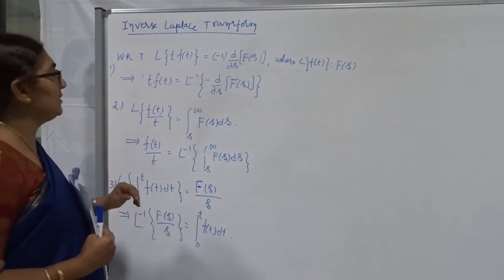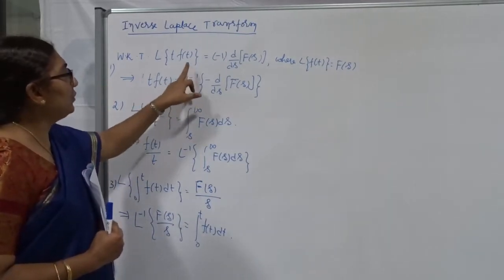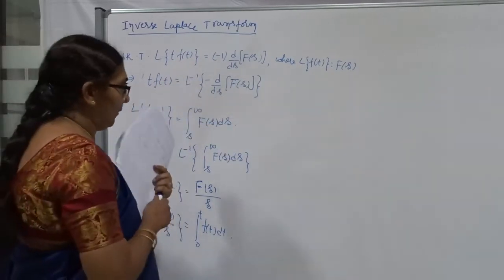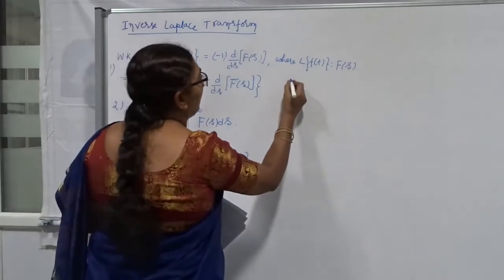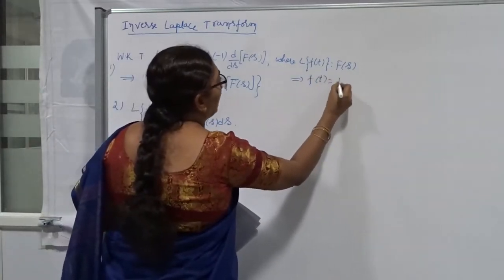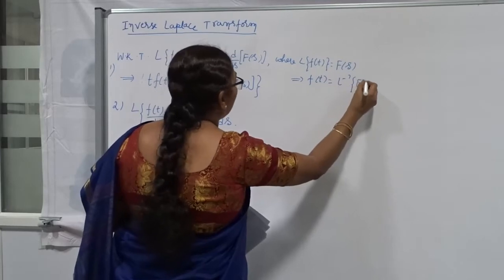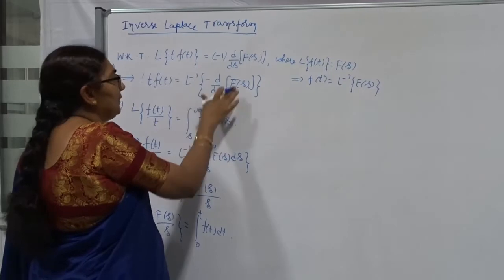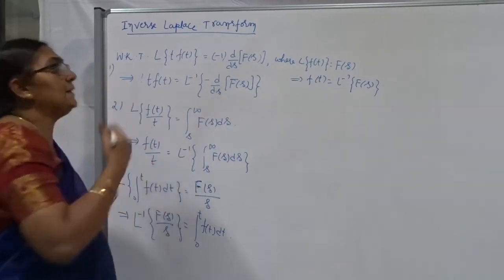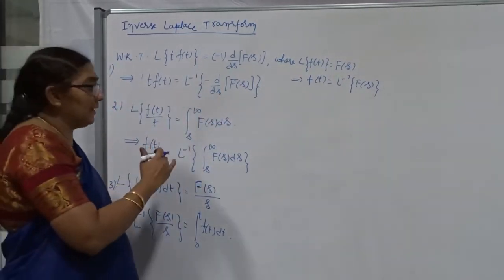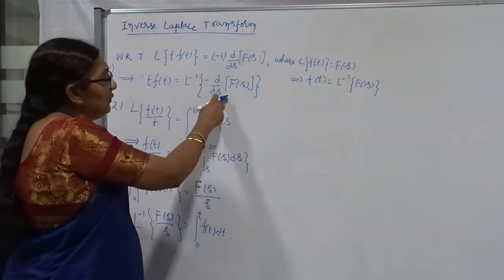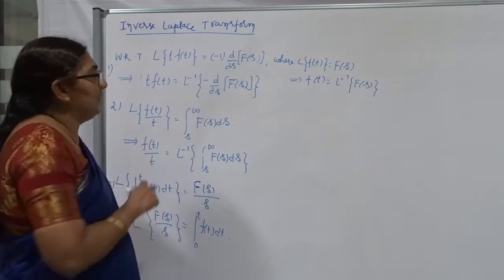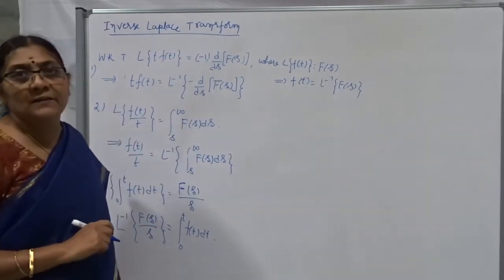But for the first formula, there is no such restriction. Suppose I have L{f(t)} = F(s), then f(t) is nothing but L-inverse of F(s). You already have F(s) — just differentiate it. After differentiation, in some cases we easily get the inverse transform, because once you differentiate it's converted into one of the standard forms. Therefore, we usually give preference to using the first result.